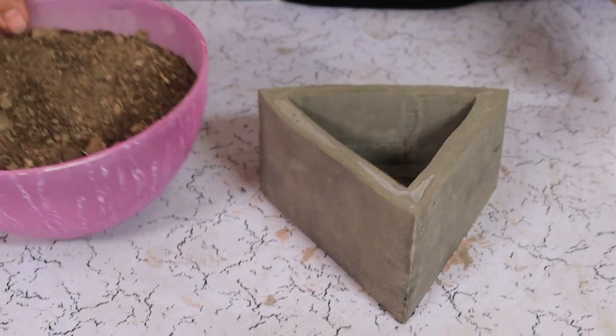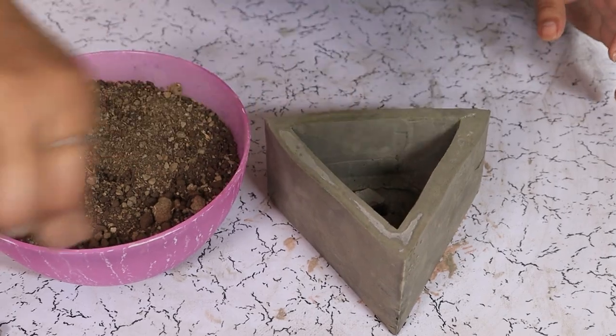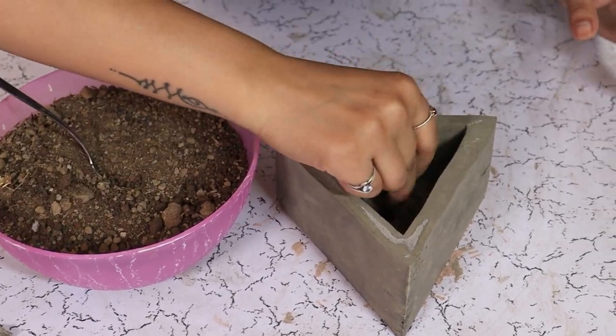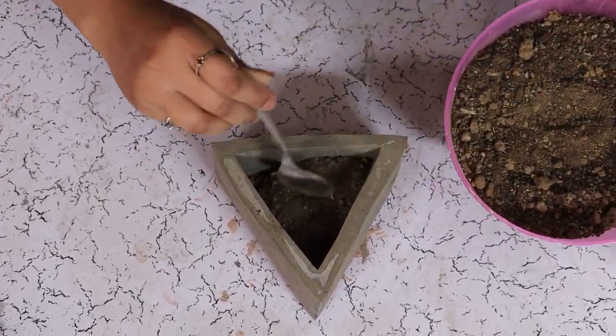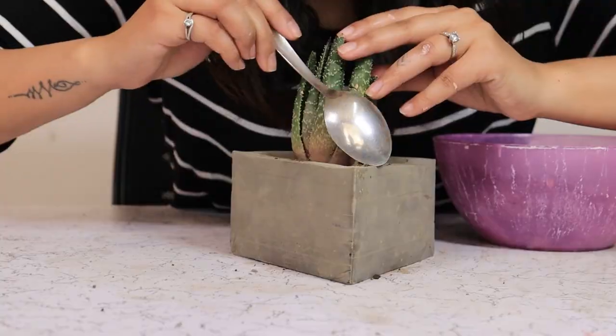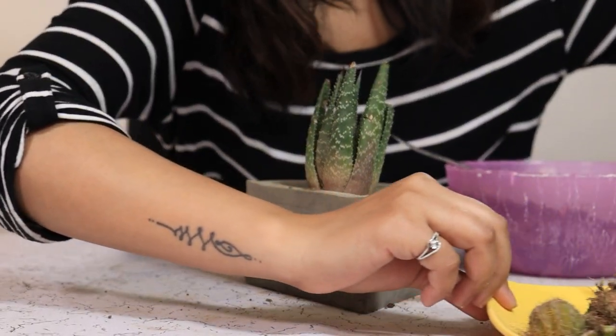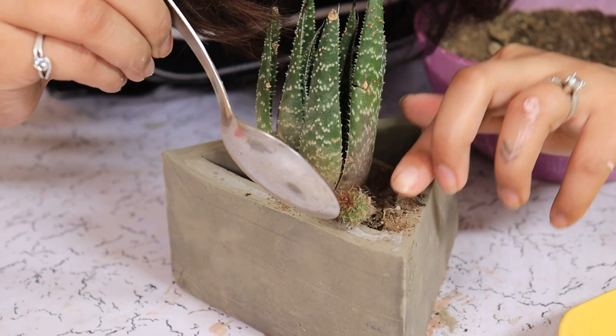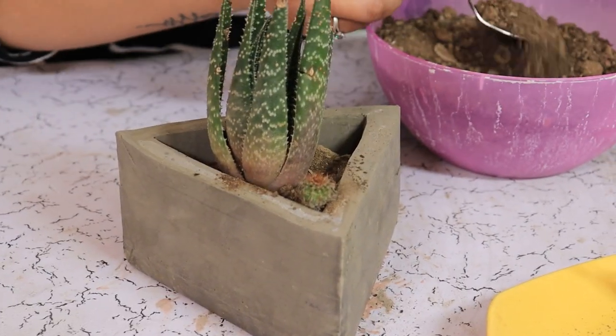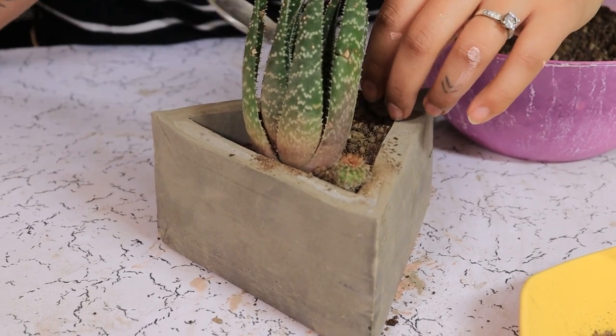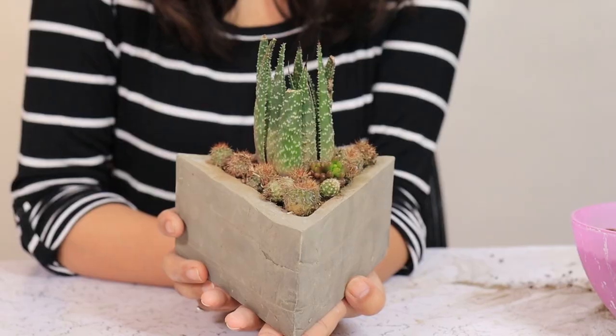Now we are going to fill it up with soil and add a plant. First I am going to put some pebbles down over the drainage hole. I am planting an assortment of tiny succulents in this one. And there we go. A triangular planter with a desert landscape is ready.